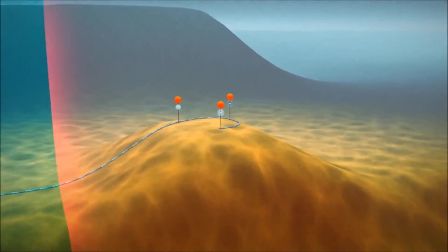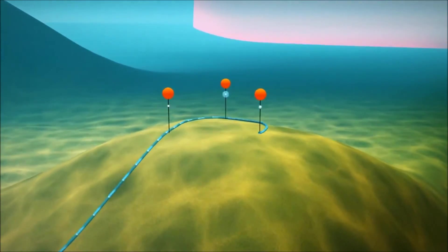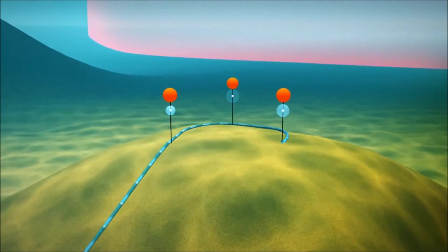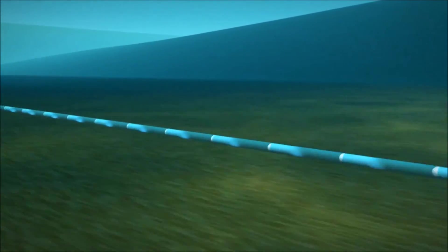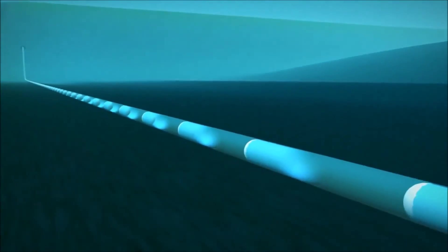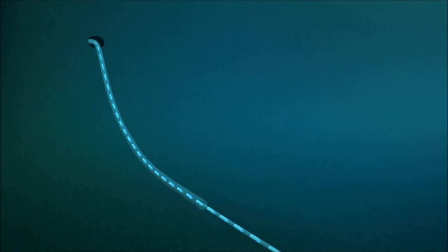There are cables on the seabed to transmit the signals. Depending on ocean floor topography, these cables can be up to 100 km long. Near the shore, the cable is encased in protective layers and then led through a pipe to avoid the rough surf zone.